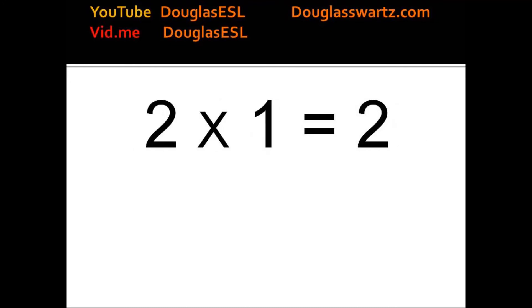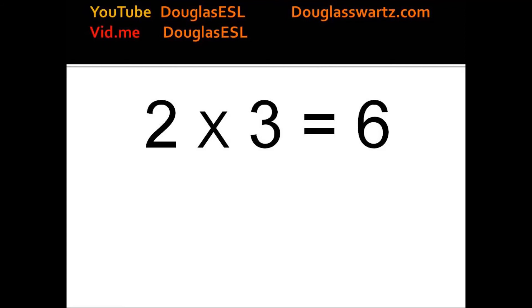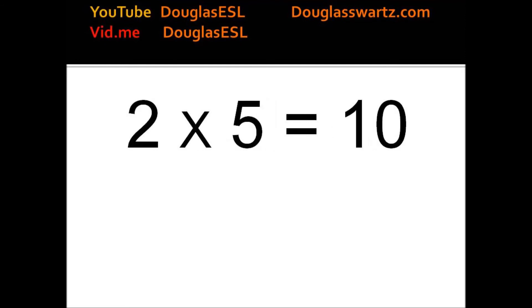2 times 1 equals 2. 2 times 2 equals 4. 2 times 3 equals 6. 2 times 4 equals 8. 2 times 5 equals 10.